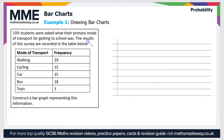So let's have a look at this example. 100 students were asked what their primary mode of transport for getting to school was. The results of this survey are recorded in the table below. Construct a bar graph representing this information.